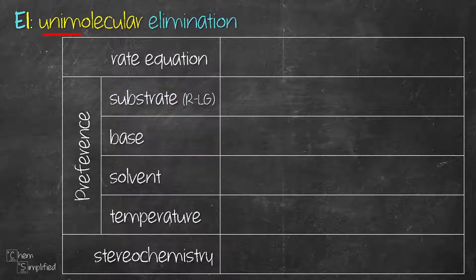E1 is unimolecular because the rate of the reaction depends only on the concentration of the substrate. E1 is therefore a first-order reaction. Now let's look at the factors that will favor E1 reaction.